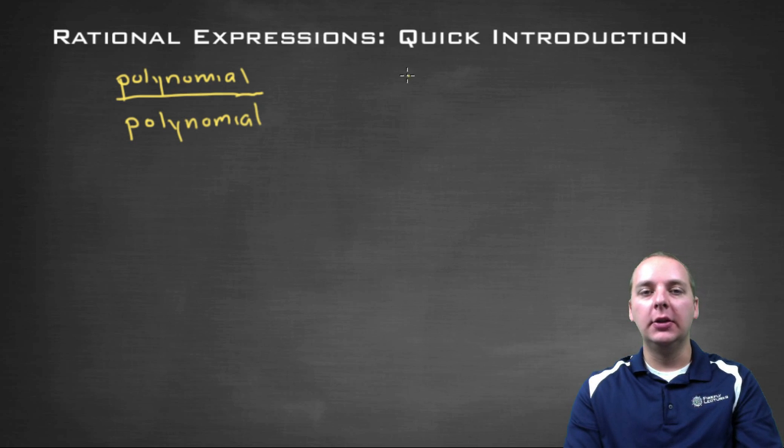But now we can. So an example of a rational expression might be something like x squared minus 6x plus 8 divided by x minus 3.